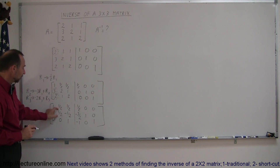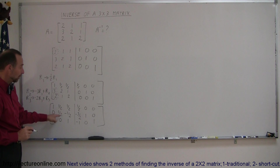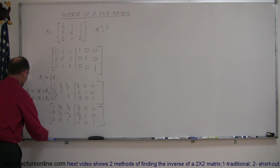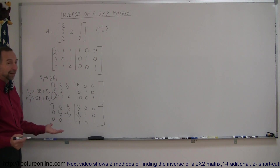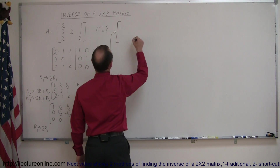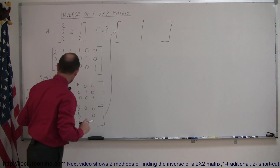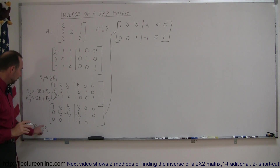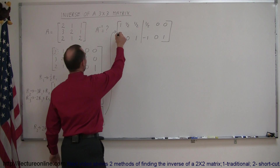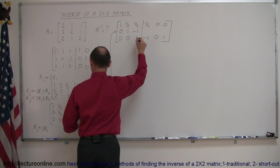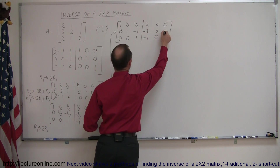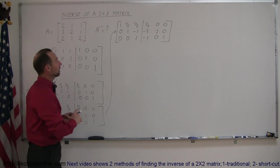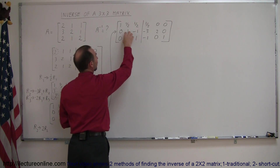Now we work on the second column. We start by making the pivot into a 1. To do that, multiply the entire row 2 by 2, which turns one-half into a 1. So take R2 and replace it by 2 times R2. Only row 2 changes; rows 1 and 3 remain the same. The new row 2 is: 0, 1, negative 1, negative 3, 2, 0. Since this element was already a zero, I only need to concentrate on the element above in row 1.